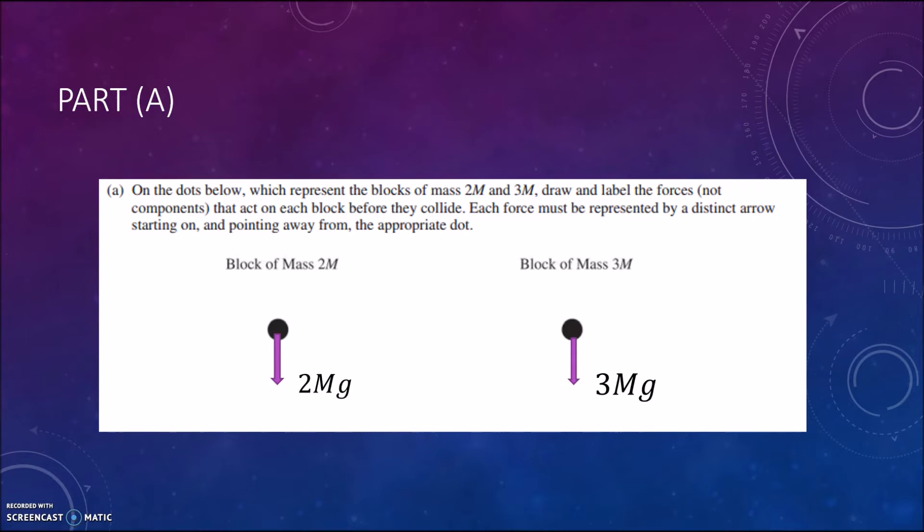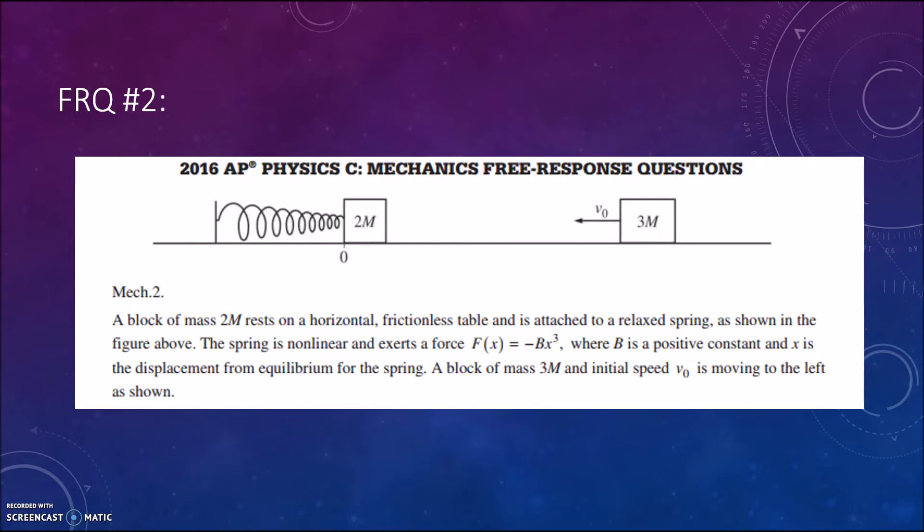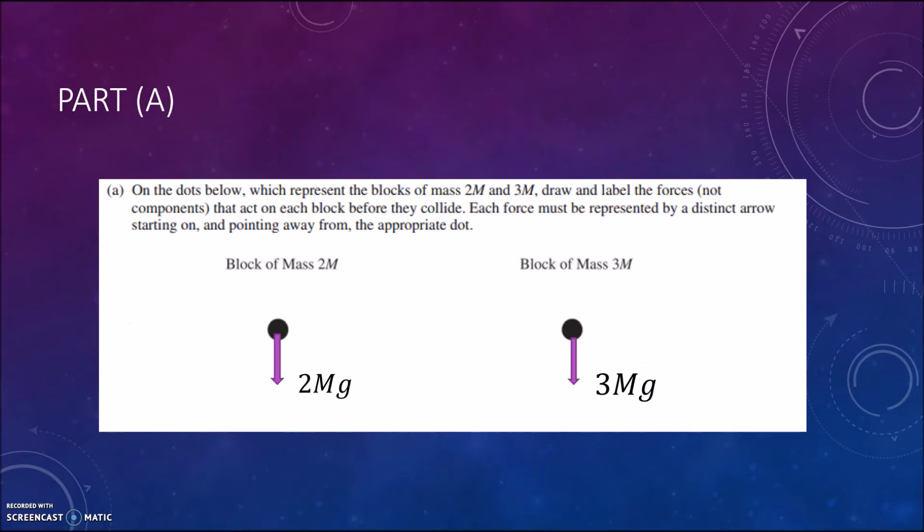And then as we know for the gravitational force there also has to be a reaction to it, a normal force if it's on a surface which it is in this picture. So there's also going to be a normal force of equal magnitude pointing in the opposite direction for each block. And this should get you sufficient points on this part.